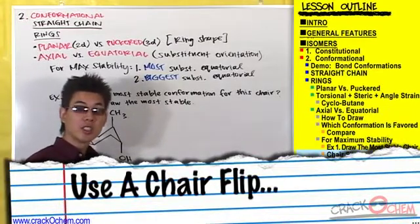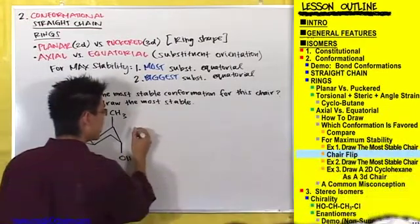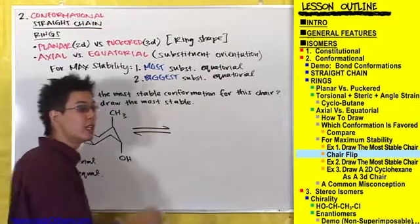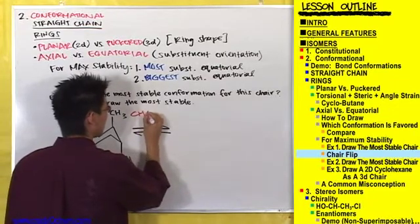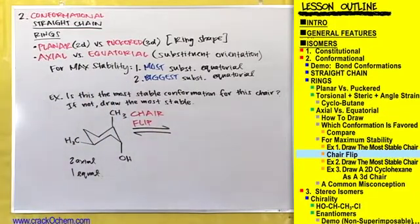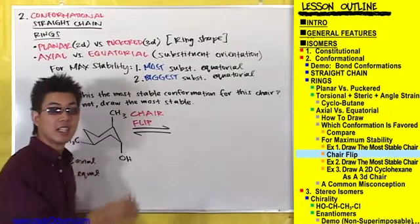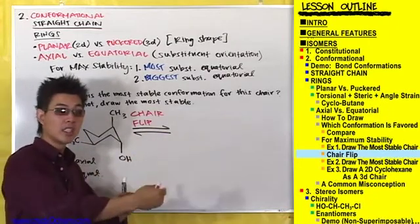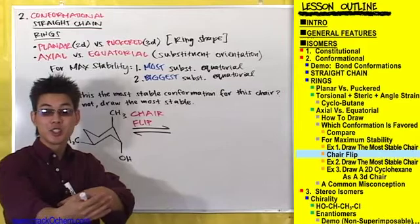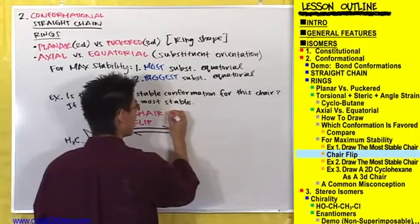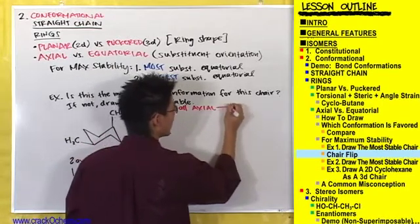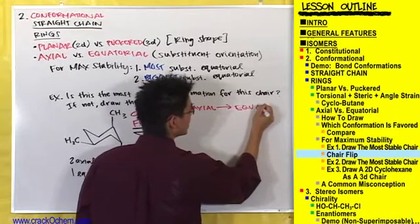Go ahead and draw an equilibrium arrow next to this chair and above it write that we're going to do a chair flip. A chair flip is going to change all axial substituents into equatorial substituents and all equatorial substituents on the ring into axial substituents.